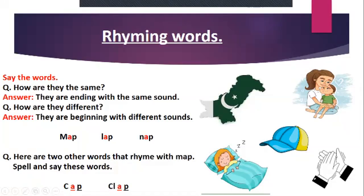And why are they different? Because they are starting with different letters and different sounds. Map is starting with M, lap is starting with L, and nap is starting with N. So these three words are similar because they have the ending sound the same, and they are different because their beginning sound is different.